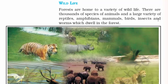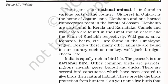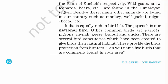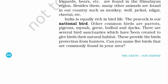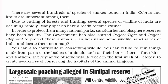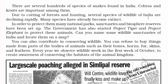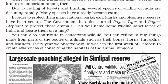Forests are home to a variety of wildlife — thousands of species of animals, reptiles, amphibians, mammals, birds, insects and worms. The tiger is our national animal. Gir Forest in Gujarat has lions. Elephants and one-horned rhinoceros roam in the forests of Assam. Elephants are also found in Kerala and Karnataka. Camels are found in desert areas and Gujarat. Wild goats, snow leopards and bears are found in the Himalayan region. Other animals include monkey, wolf, jackal, nilgai and cheetah. The national bird is the peacock; other birds include parrots, pigeons, myna, geese, bulbul and ducks.